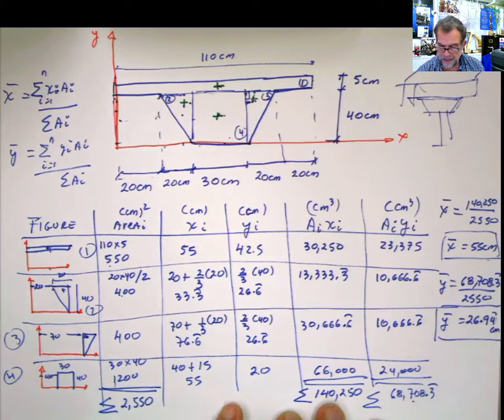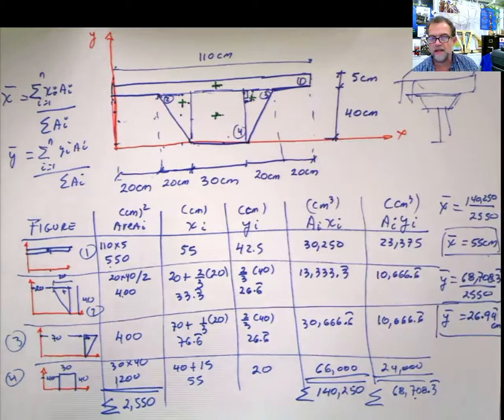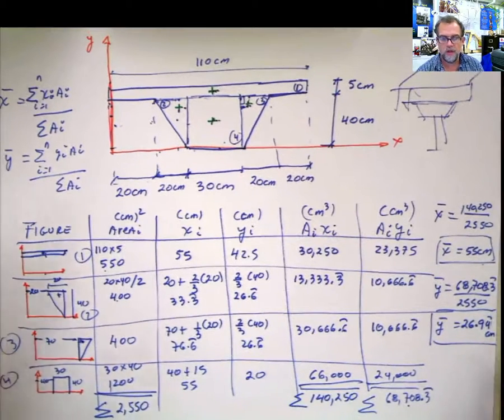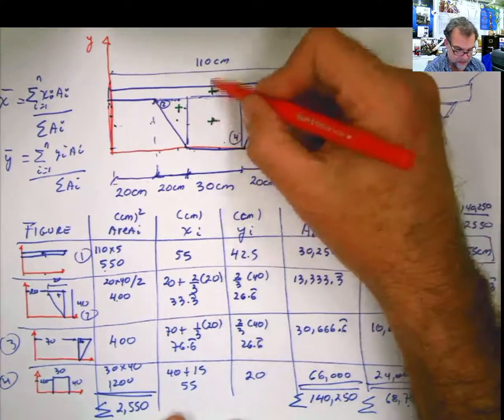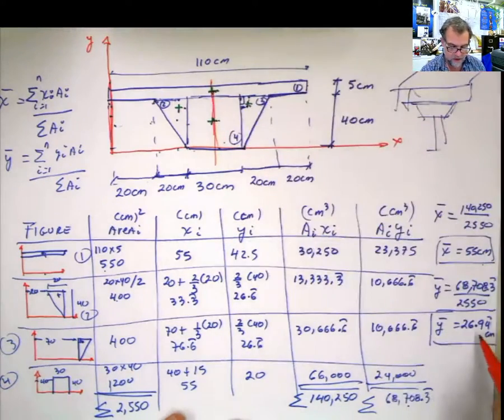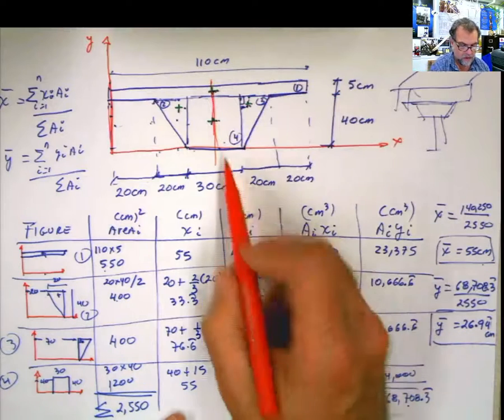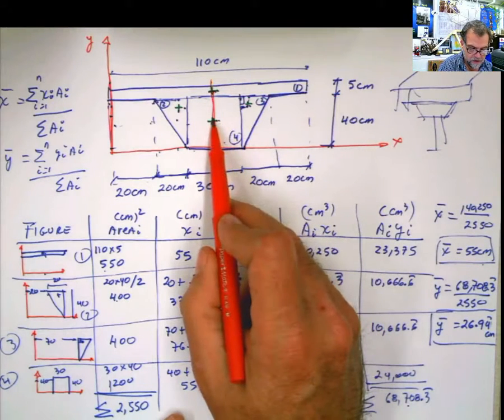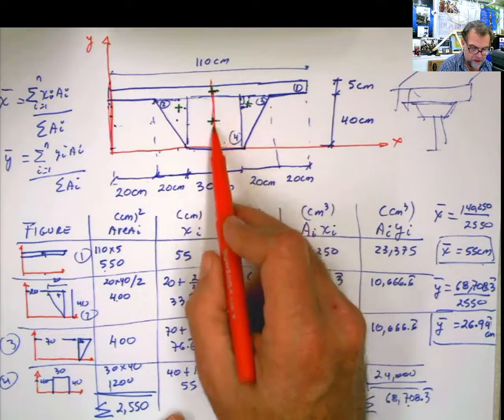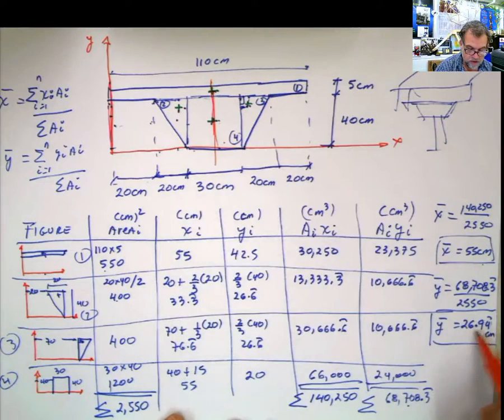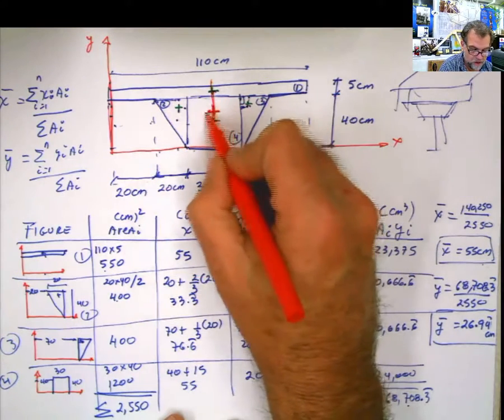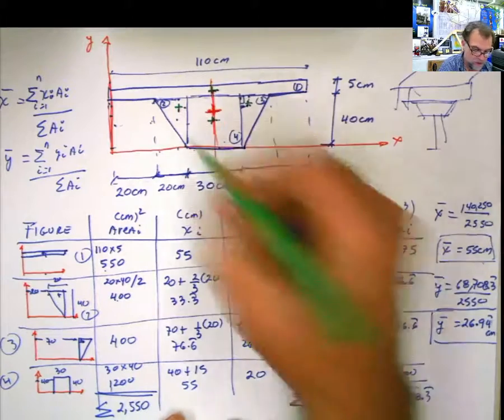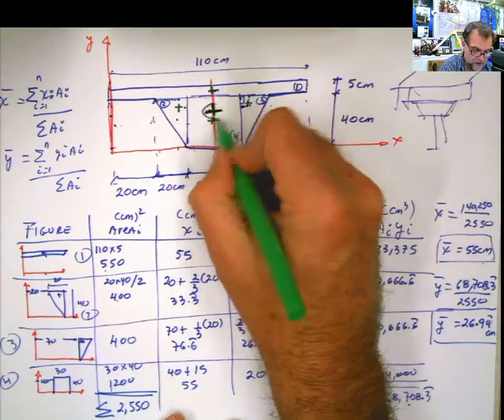Now, after doing this, I like to locate the centroid within my figure just to have an idea of how good it looks like, or how plausible it looks like. x bar, 55, that's exactly what it's supposed to be, 55. Perfect. And this is 26.4. Well, half of this is 20. But it's obvious that it has to be higher than 20. I don't know how much. This is the calculation. But it has to be higher because there's more area on the top part. So the centroid is going to be located somewhere right there of the composite figure.